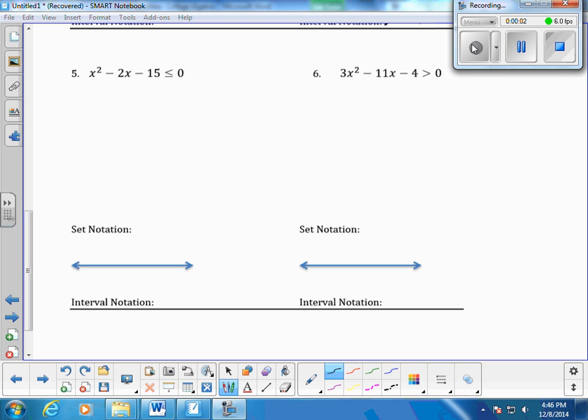Alright, when we're solving a quadratic, x squared minus 2x minus 15, the first thing we want to do is see if we can factor this so we can find the critical points.